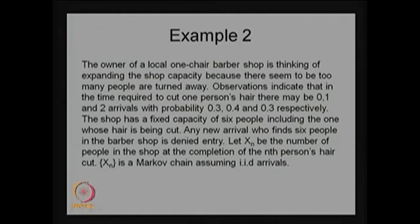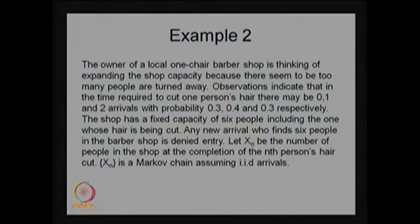During one person's haircut, only three possibilities are possible: zero arrivals, one arrival, or two arrivals. The shop has a fixed capacity of six people including the one whose hair is being cut, meaning maximum six people can be allowed in the system — five people can wait maximum and one person is under service. Any new arrival who finds six people in the barbershop is denied entry; the capacity of the system is finite with size six.